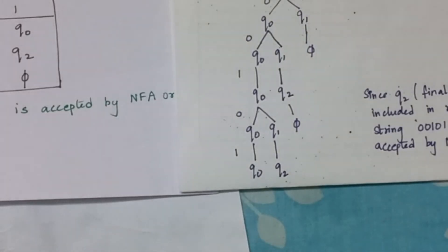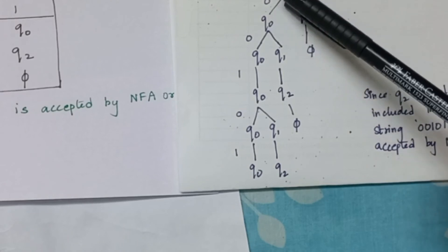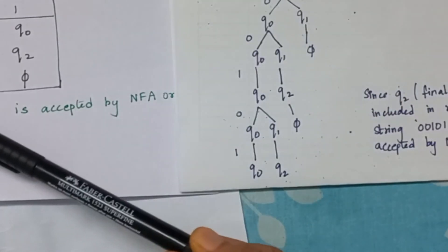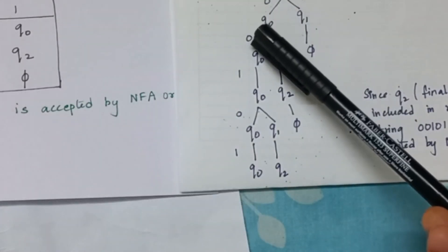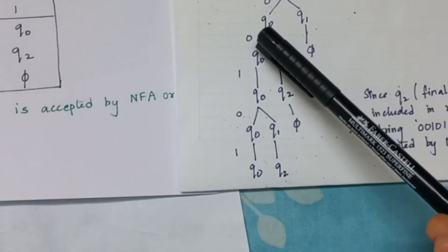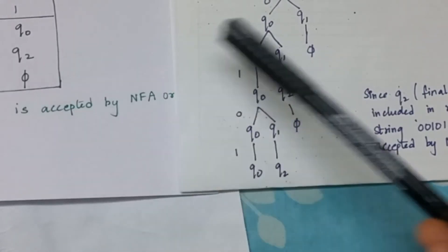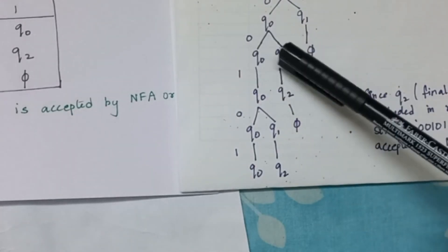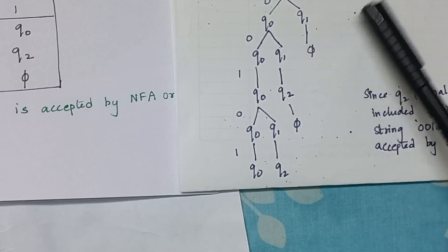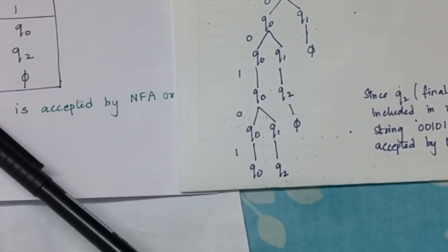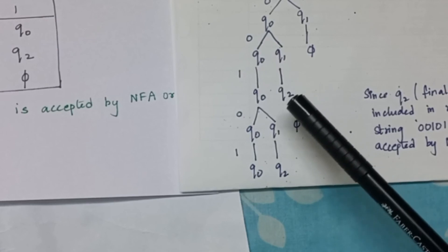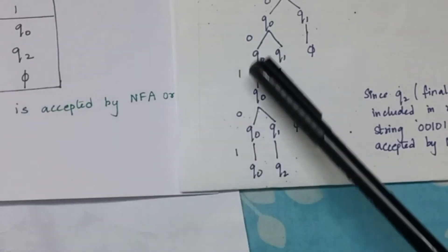There is another method to check if the string is accepted or not. Here I have all the input symbols. q0 with my first input symbol 0 gives me q0 and q1. I am supposed to apply the next input symbol, which is 0, for both q0 and q1. q0 with 0 gave me q0, q1. q1 with 0 gave me null, so when it is null I leave it. The next alphabet in the string is 1. I apply for both q0 and q2, and I get the result as q0 and q2.